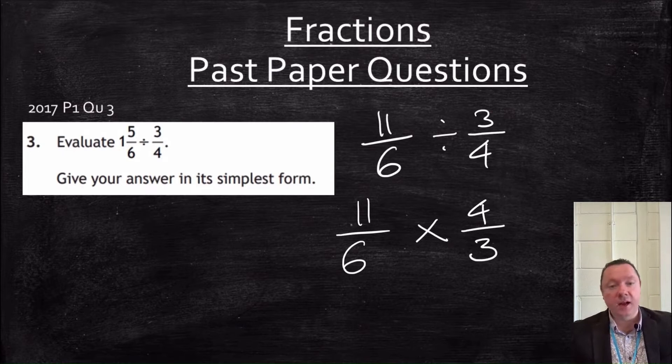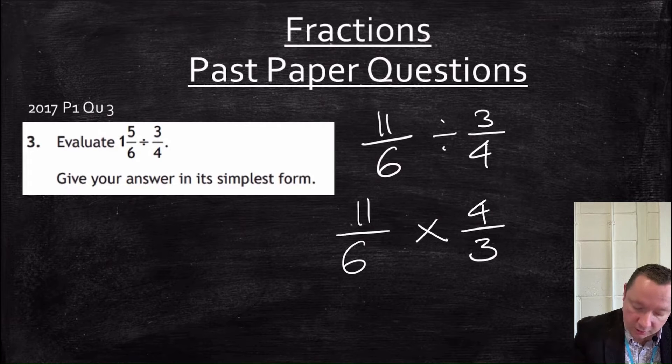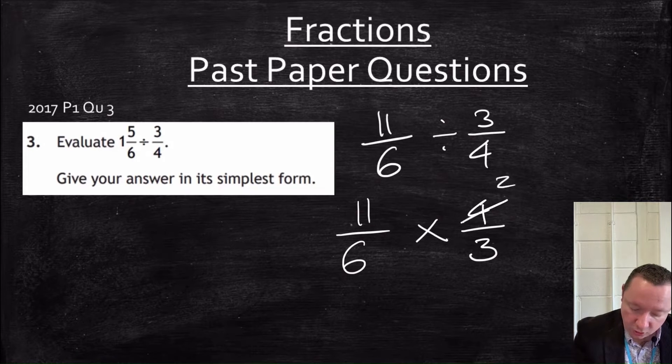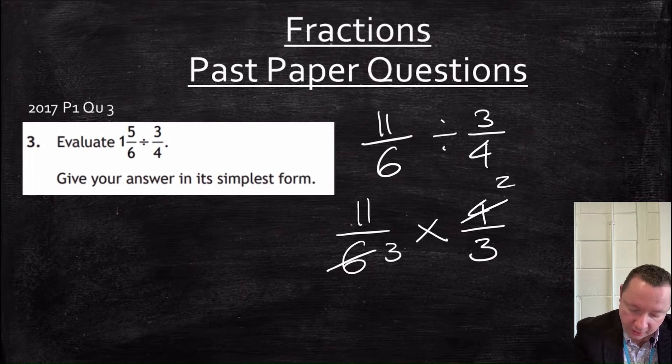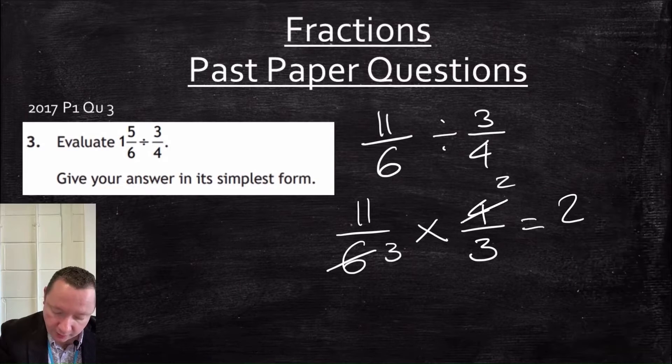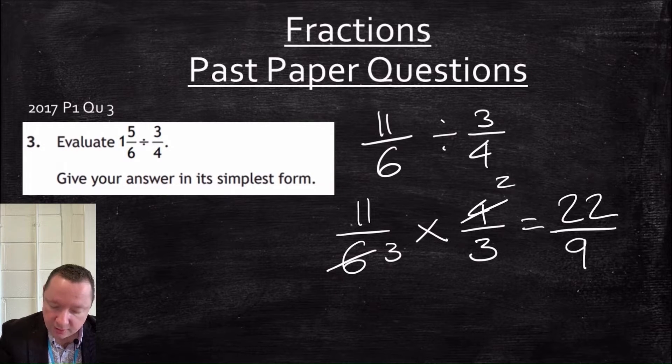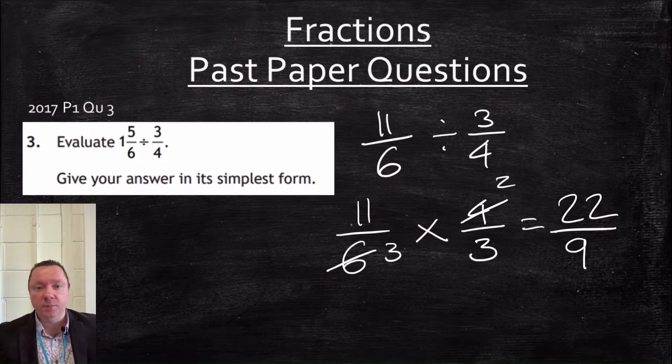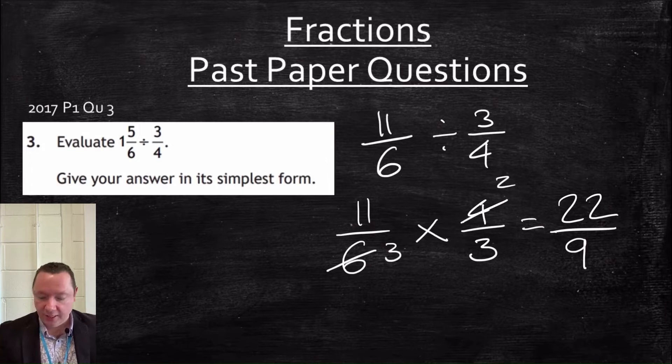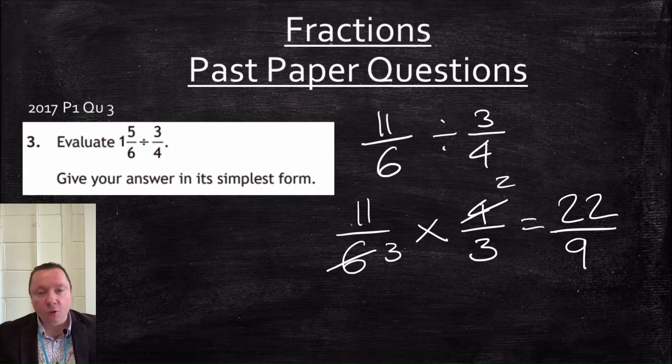We can now simplify in advance or at the end. So I can divide this one by 2 to get 2, this one by 2 to get 3. And then our final answer becomes 11 times 2 is 22, 3 times 3 is 9. Just double check there's no more simplification. There is not. At this stage I can leave my answer like that. I do not have to change it back to a mixed number. So that's fine. If I did change it back to a mixed number, I would get 2 and 4 ninths.